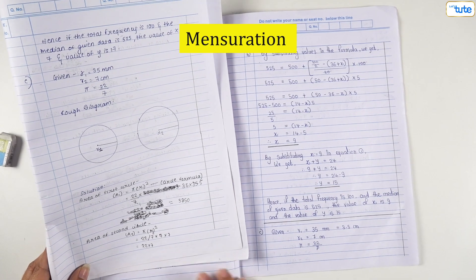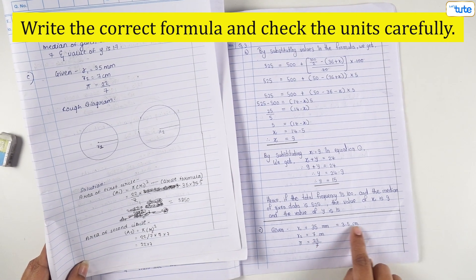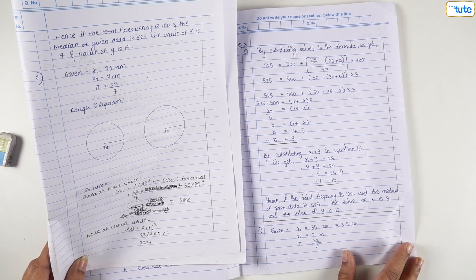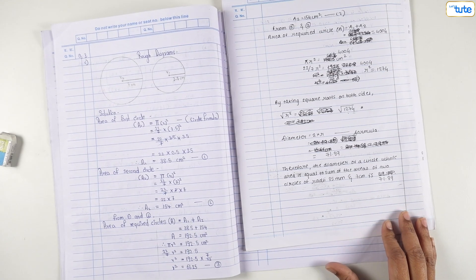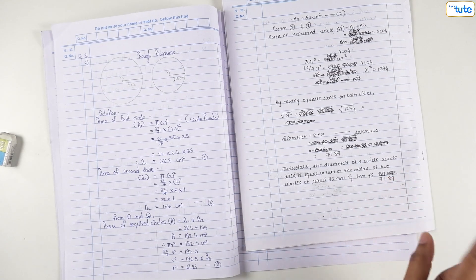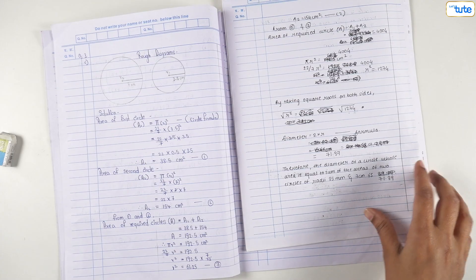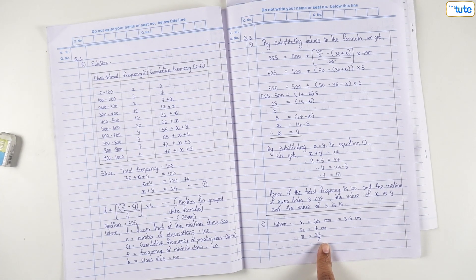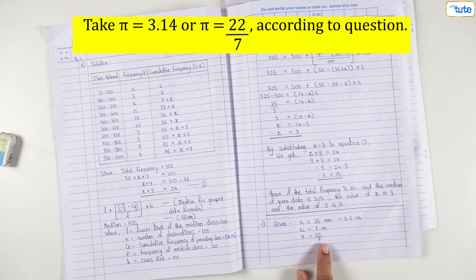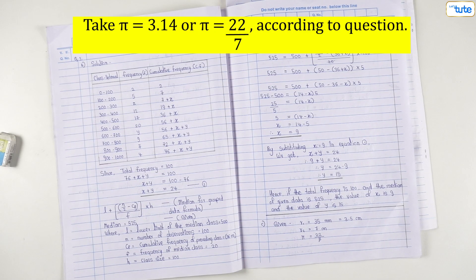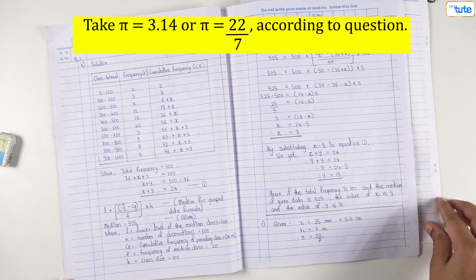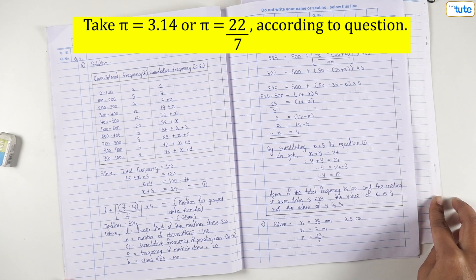In questions of mensuration, write the correct formula and check the units carefully. If there are different units, first convert them into standard unit. If there are no units mentioned in the question, write just units in your final answer. In the case of pi, take whatever value mentioned in the question. If at all the value of pi is not given, you can either take 3.14 or 22 upon 7 whichever you find easy for calculation.